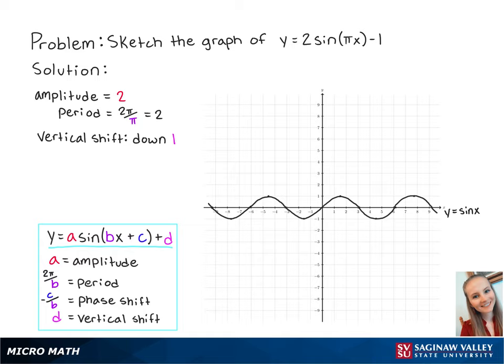Next, we will plot and label the important points of the graph. Since the vertical shift is down 1, the starting point will be at (0, -1), and since the period is equal to 2, the last point will be at (2, -1). This means the midpoint is at (1, -1).